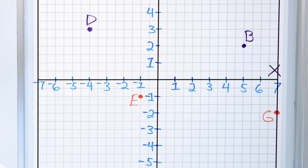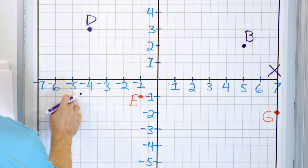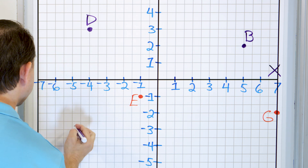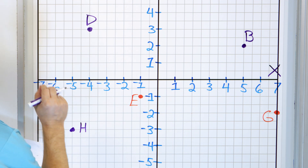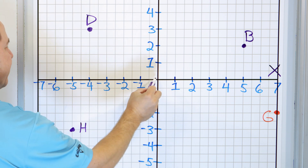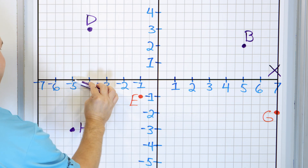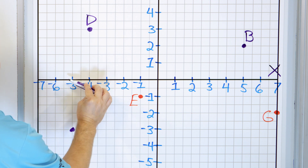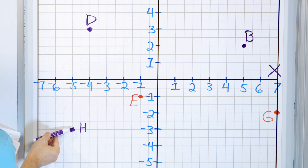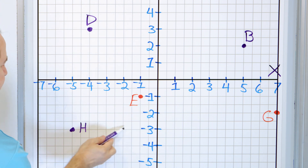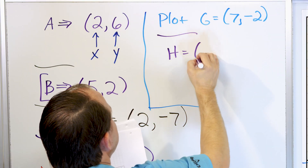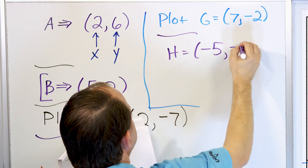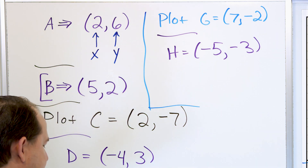Almost done. I'm putting a point on the board and we'll read it off — this is point H. In the x direction: negative one, two, three, four, five — I stop there because it lines up. Then going down: negative one, two, three. So point H is negative five comma negative three.